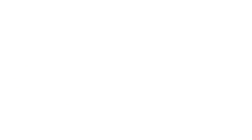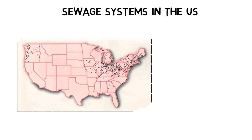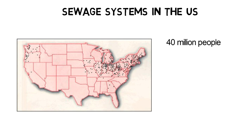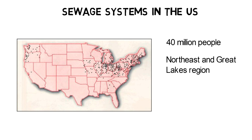In the US, about 40 million people are still connected to combined sewer systems, and most of them are located in the North, East, and Great Lakes region.